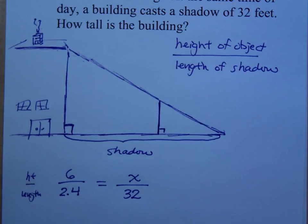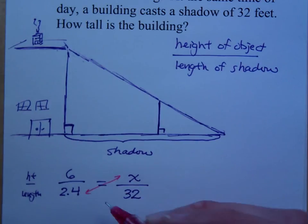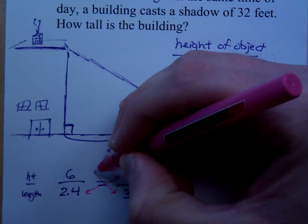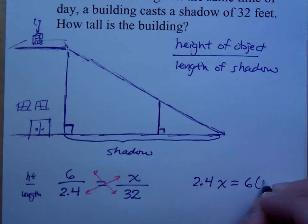So what are we going to do from here? The cross-products are going to be equal. So that means 2.4x is going to equal 6 times 32, right?